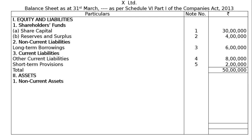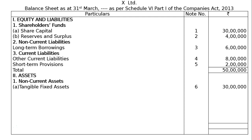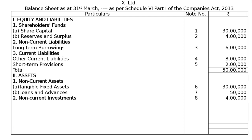Then the assets part. First, non-current assets, under which fixed assets — tangible fixed assets, note number 6: 30,00,000. Next is loans and advances, that is non-current loans and advances, note 7: 50,000. Next is non-current investments, note number 8: 4,00,000.